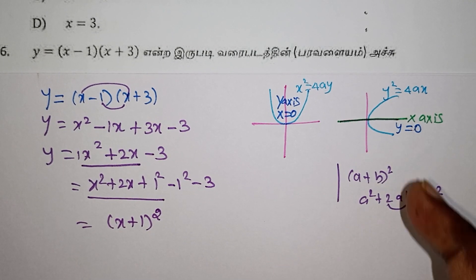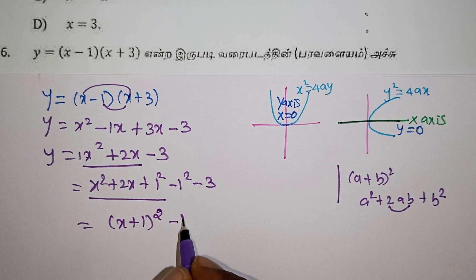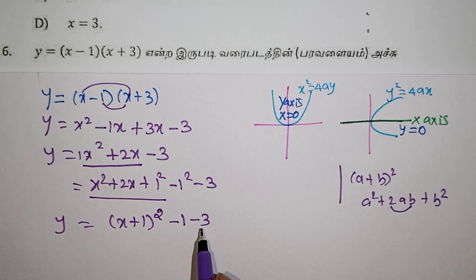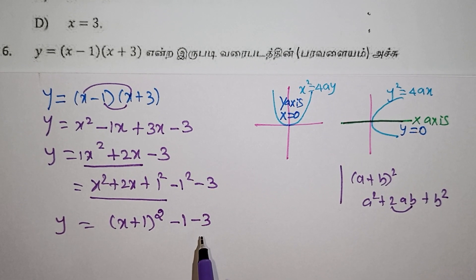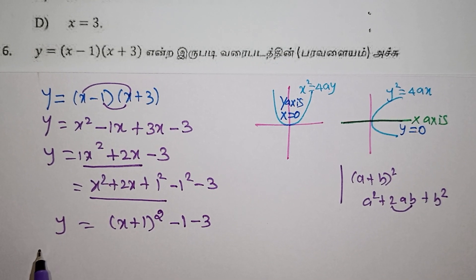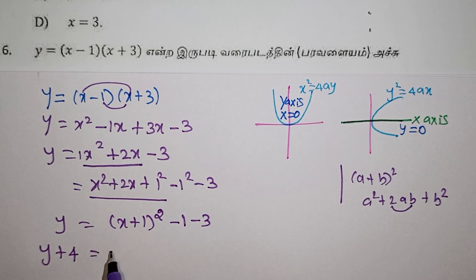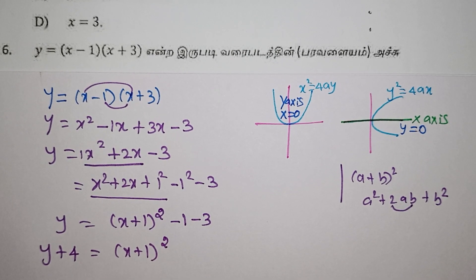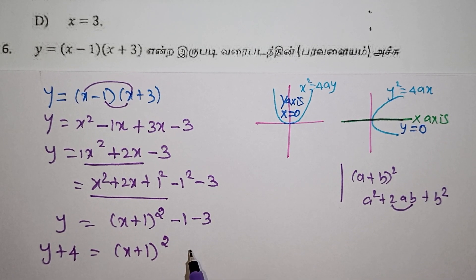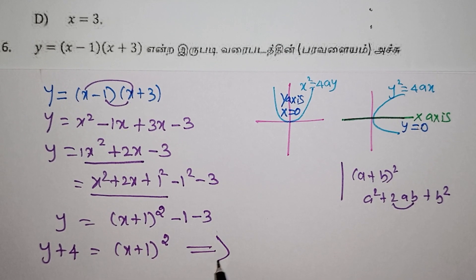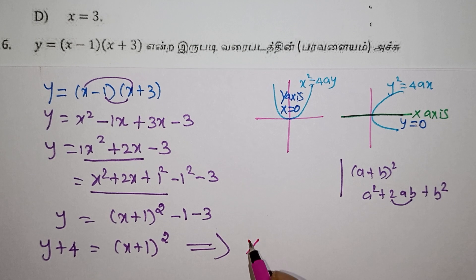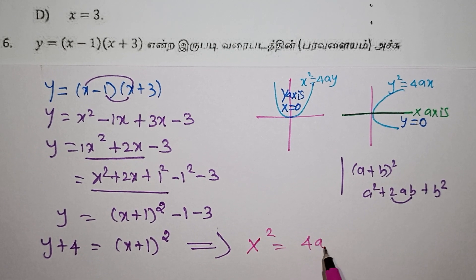The three terms give x plus 1 whole squared. This is minus 1 and minus 3. Minus 1 and minus 3 add to minus 4. Minus 4 becomes plus 4 on the other side. The equation is formed. So x plus 1 whole squared is equal to 4y.